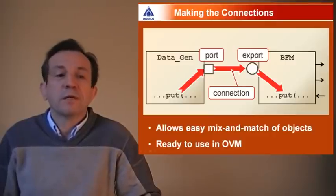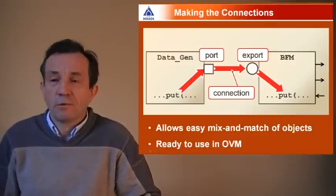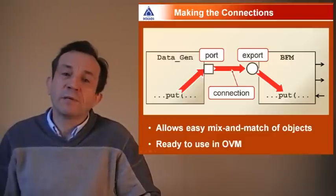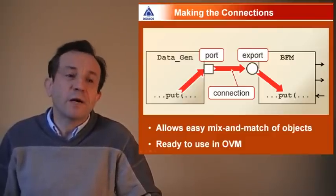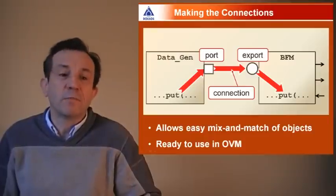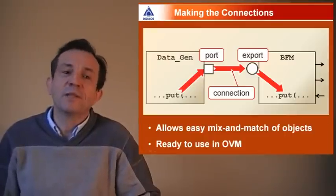So the port allows the data generator to call a function that's implemented somewhere else. The export allows the bus functional model to give away its implementation of the function so that it can be used by somebody else. Once you've done those two things, you simply need to connect the port and the export together so that OVM can then take responsibility automatically for redirecting the data generator's put method call over to the put method implementation in the BFM.